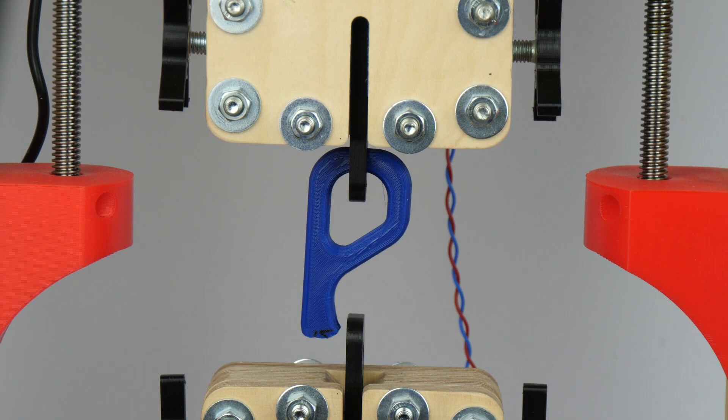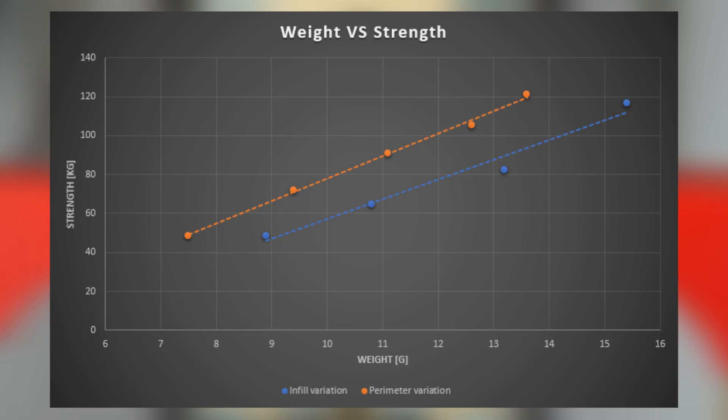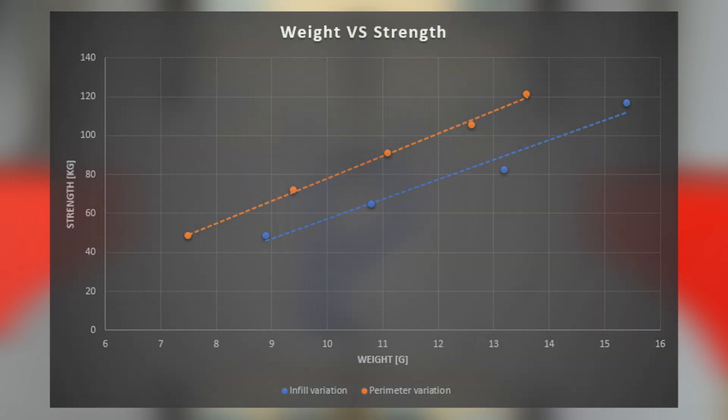If we take a look at the results we can directly see that increasing the shell thickness is way more efficient than varying the infill. At the same weight a hook that was reinforced with more shells is significantly lighter than a hook where only the infill was increased. What's also interesting is that a hook with six perimeters is already as strong as a part with two perimeters and 100% infill.